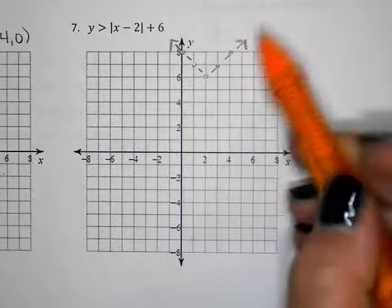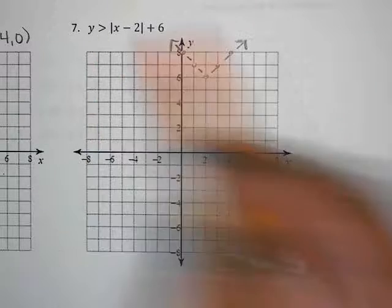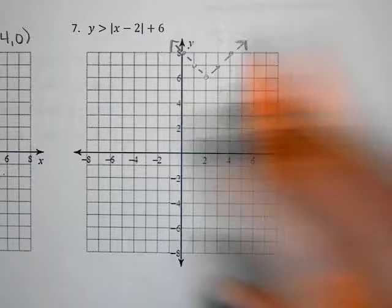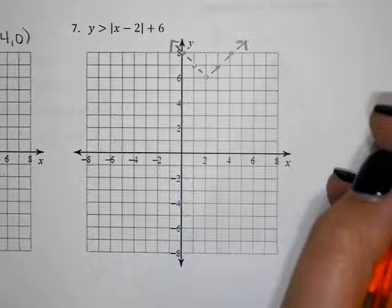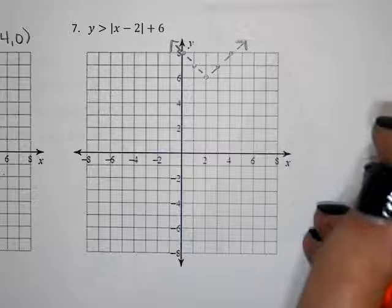You were able to graph that part. You looked at the inequality and could see that it was a dotted line. You got here, but you're confused about the shading because shading on a V-shaped graph is not the same as a line and you just want some help with that.